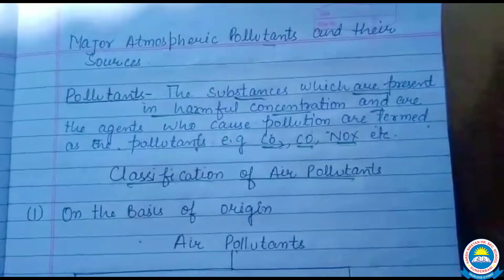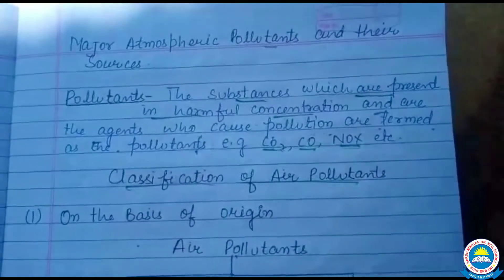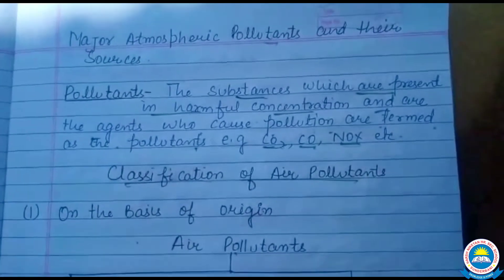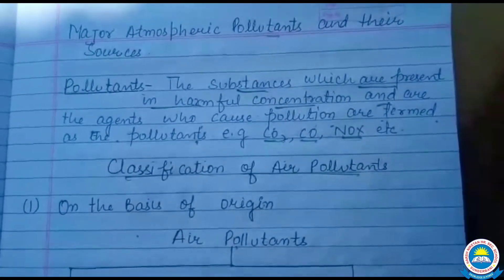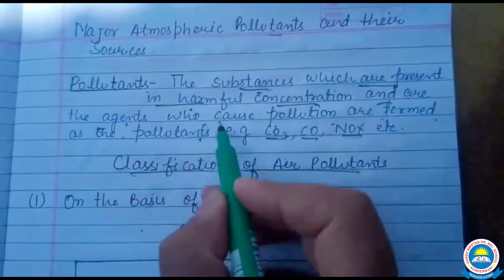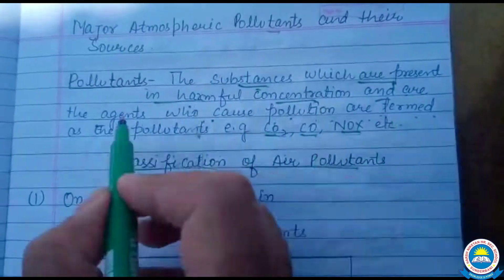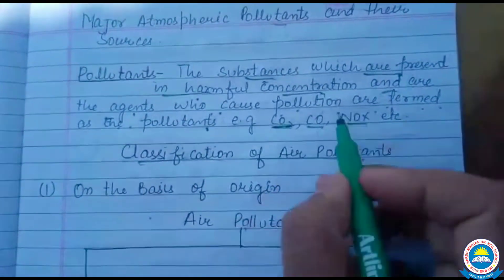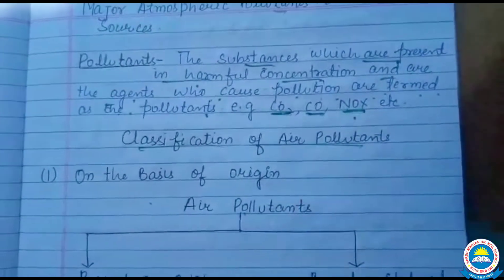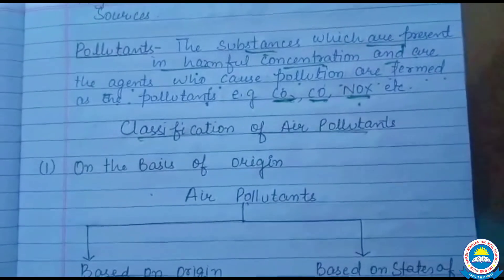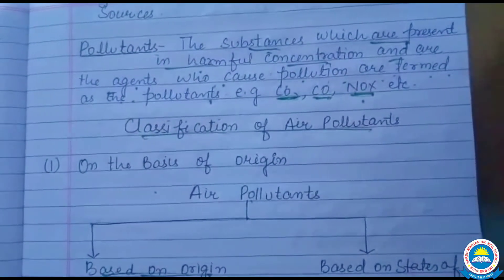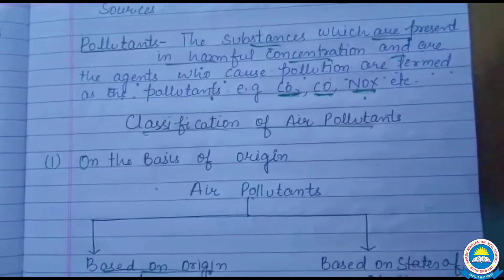Our topic is major atmospheric pollutants and their sources. Pollutants are substances which are present in harmful concentration and are the agents which cause pollution. For example, carbon dioxide, carbon monoxide, NOx, nitrous oxide — these substances present in harmful concentration are called pollutants.